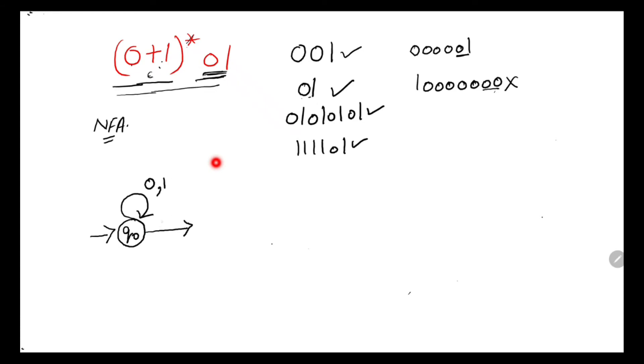Next comes 0, and then comes Q1. Q1 with 1 will go to Q2, and that one will become the final state. So everything which is given in the regular expression has been denoted in the particular NFA.